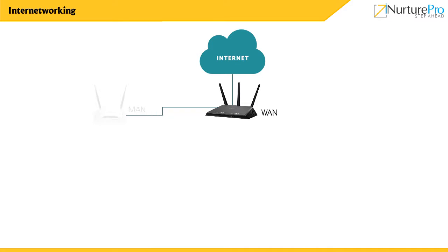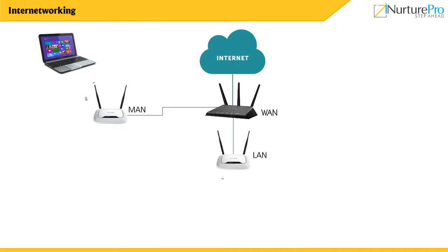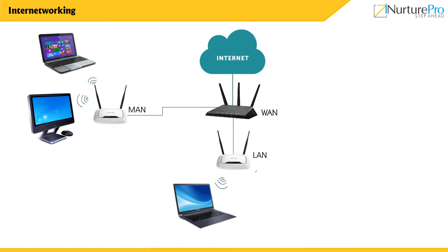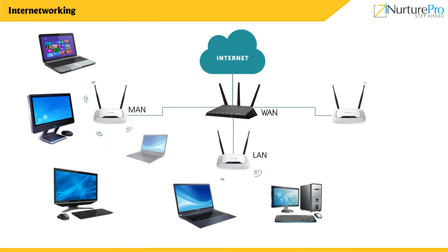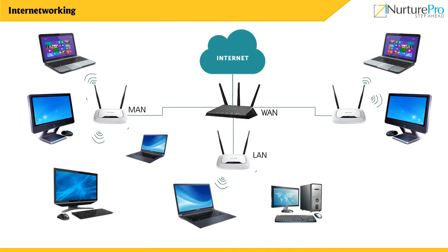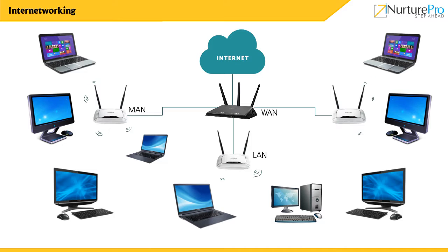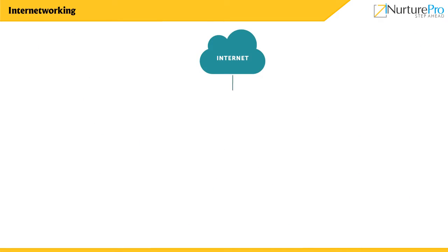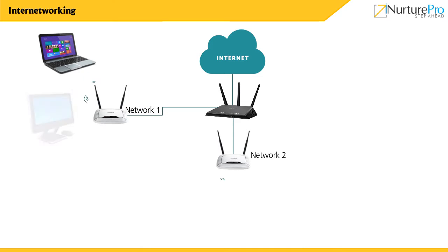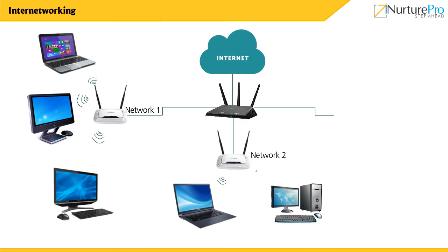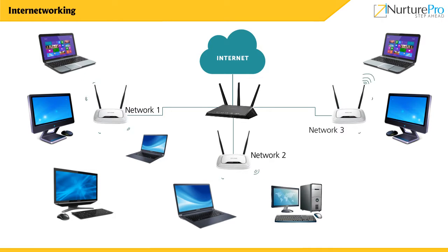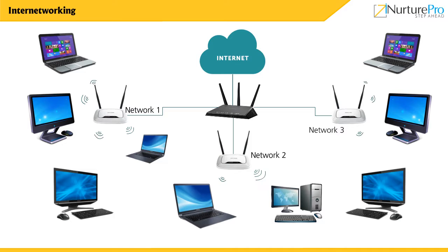Networks can be a collection of different small networks. A big network may contain many LAN, MAN, and WAN running with different protocols and topologies. The combination of small networks into a single network is called internetworking. It allows users of one network to communicate with users of any other network.